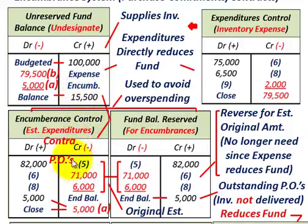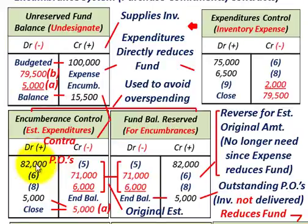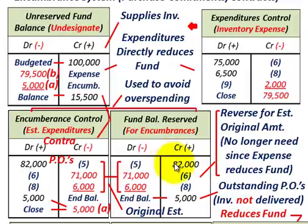We had a budgeted amount of $100,000 for those supplies, and we issued purchase orders of $82,000. So we debit our encumbrances control account for $82,000, and credit our fund balance reserve for encumbrances for $82,000.